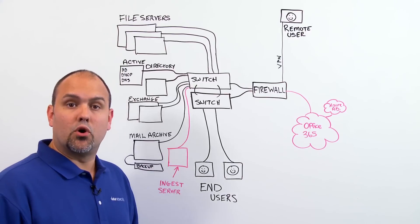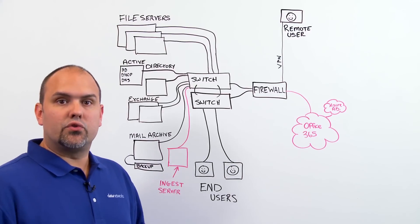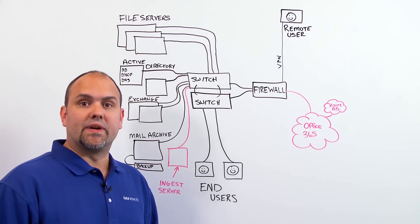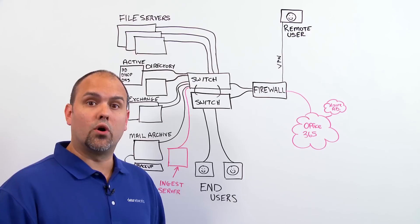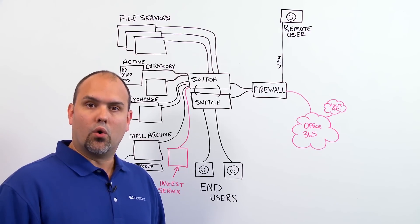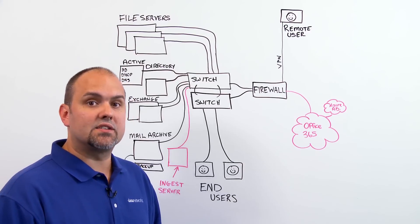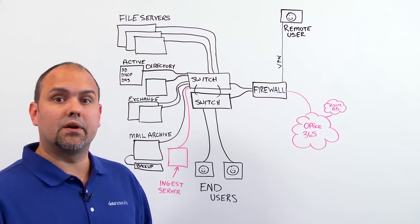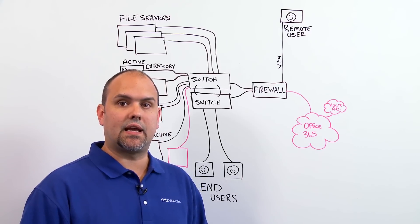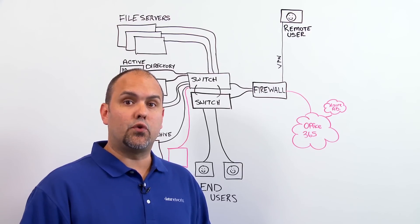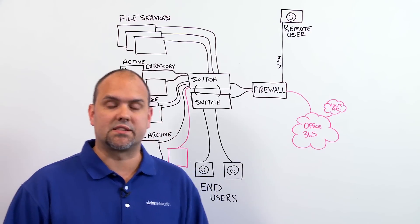Let's talk about the different types of migrations you could utilize. The first is a remote move migration. You will use this for one of two reasons: if you're going to do an Exchange hybrid deployment with mailboxes both on-premise and cloud-based, or if you're going to move mailboxes over a long period of time. This is supported by Exchange 2010 and later, or if you have more than 2,000 mailboxes.